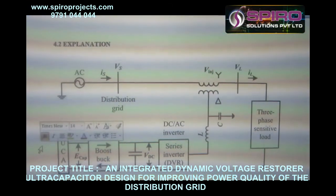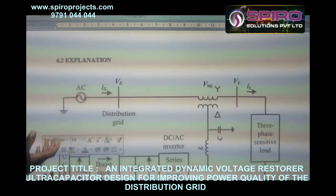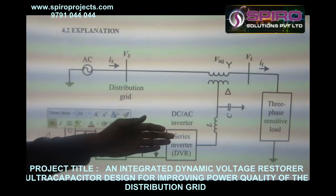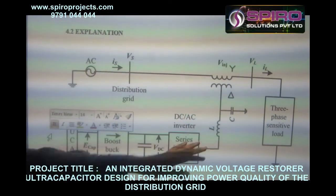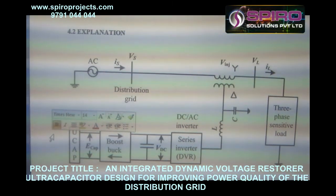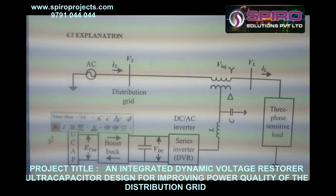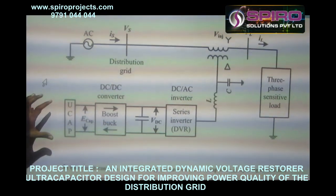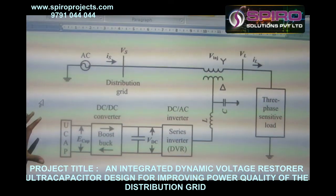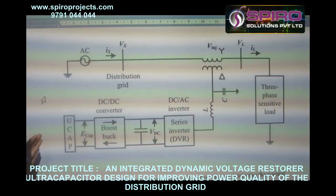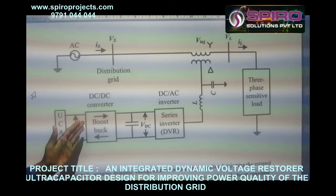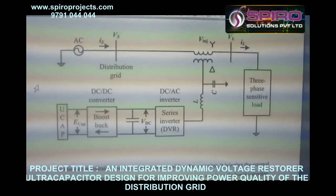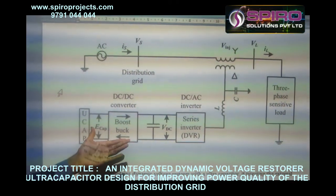This is the proposed technique. This is the system. This is my generating station generating some power, and this is my distribution kit. I am distributing the power to the consumer. When the consumer takes a heavy load, there is a voltage sag present in the transmission line. In that case, I need to inject power into the transmission line — that is the purpose of the ultra capacitor. It is like a DC storage device that injects power into the buck-boost converter.